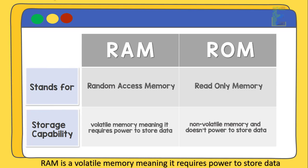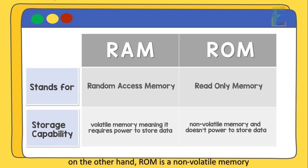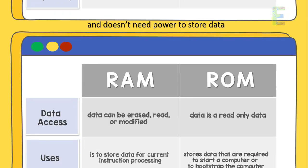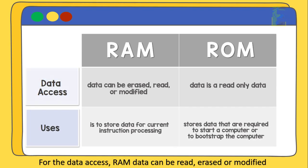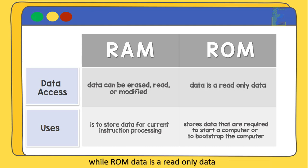RAM is a volatile memory, meaning it requires power to store data. On the other hand, ROM is a non-volatile memory and doesn't need power to store data. For data access, RAM data can be read, erased, or modified, while ROM data is read-only.